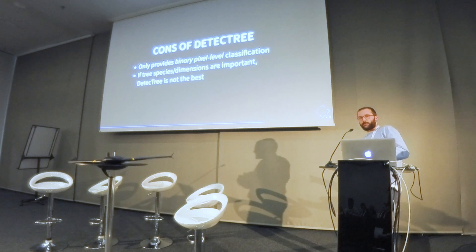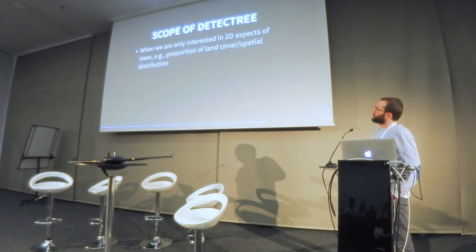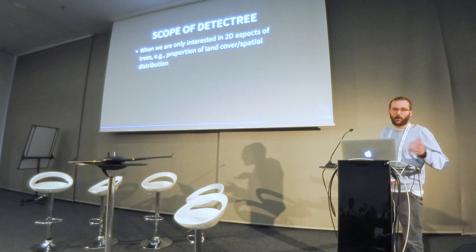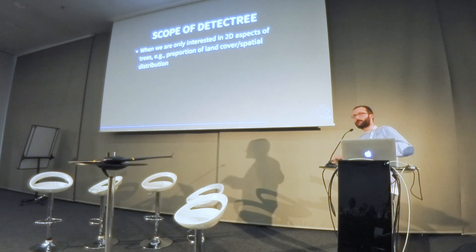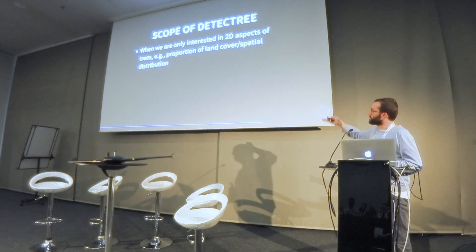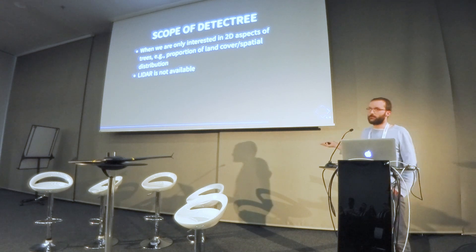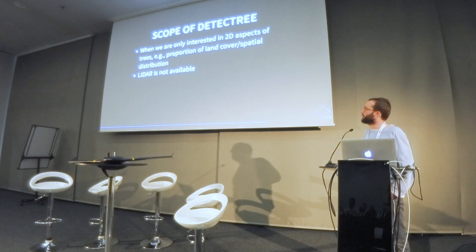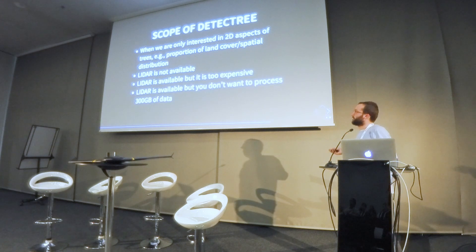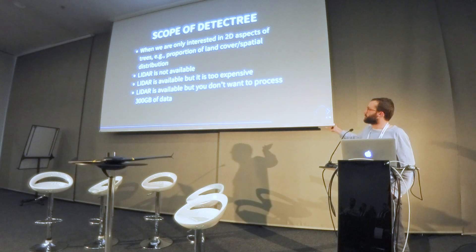If tree species or dimensions are important, this is not the best approach. But the scope is: if we're only interested in 2D questions — like how much tree cover is there in this neighborhood — and tree dimensions aren't so relevant, and LiDAR is not available or too expensive or you don't need that precision, you can use Detectree to get a good grasp of tree coverage.